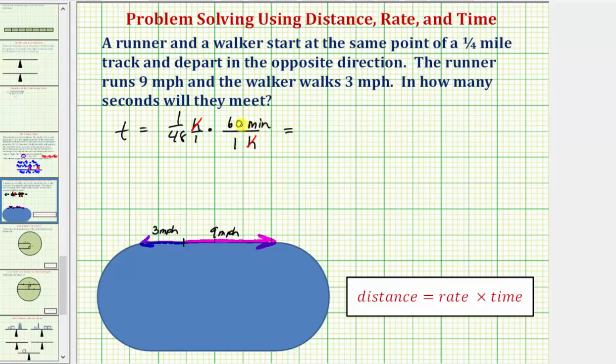And let's go ahead and find this. Multiplying, notice how we would have sixty divided by forty-eight minutes. And sixty divided by forty-eight is equal to five-fourths, or if we want, one point two five minutes.